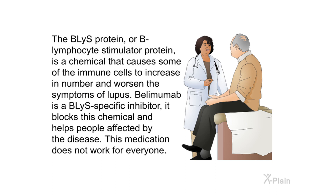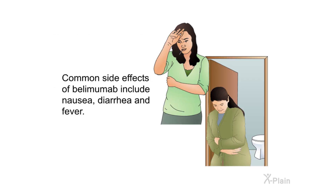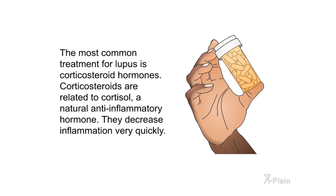The BLyS protein, or B lymphocyte stimulator protein, is a chemical that causes some immune cells to increase in number and worsen the symptoms of lupus. Belimumab is a BLyS-specific inhibitor — it blocks this chemical and helps people affected by the disease. This medication does not work for everyone. Common side effects of belimumab include nausea, diarrhea, and fever.